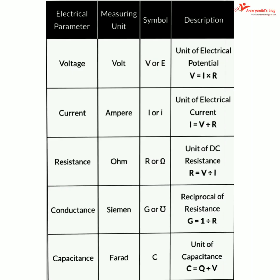The following table shows the parameters, symbols, and formulas of some units used in electrical engineering. Voltage: unit volt, symbol V or E, formula V = IR. Current: unit ampere, symbol I, formula I = V/R.